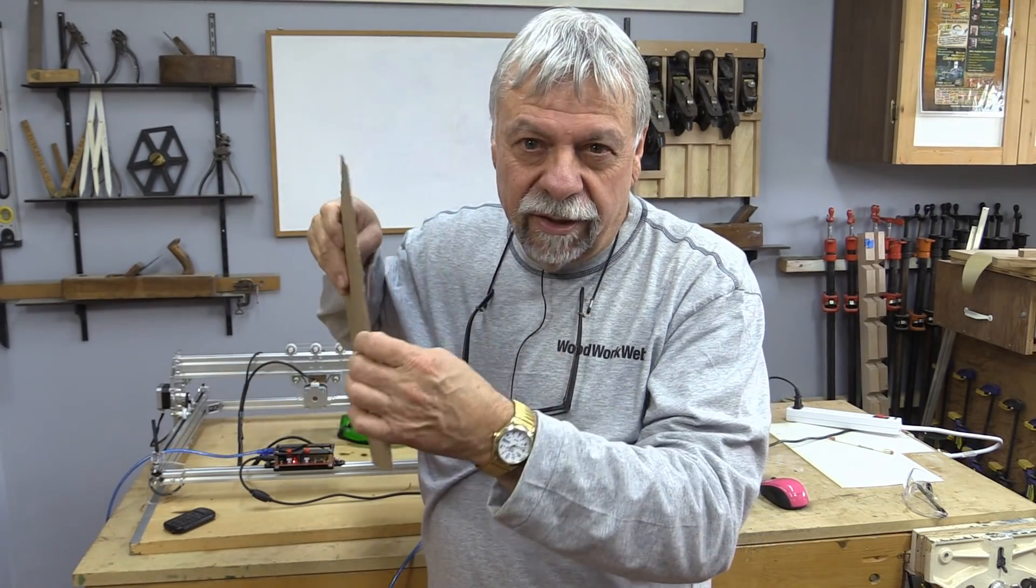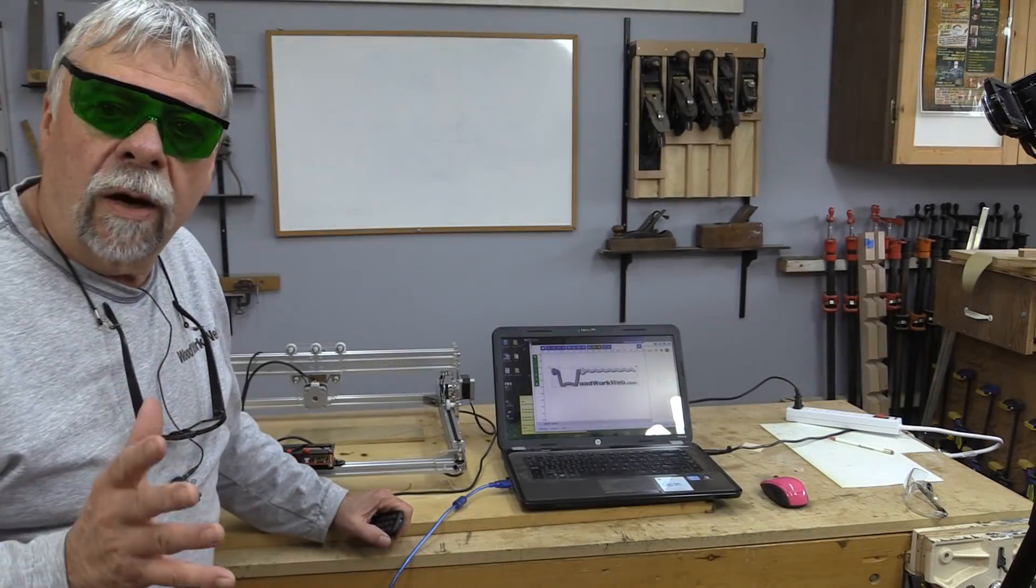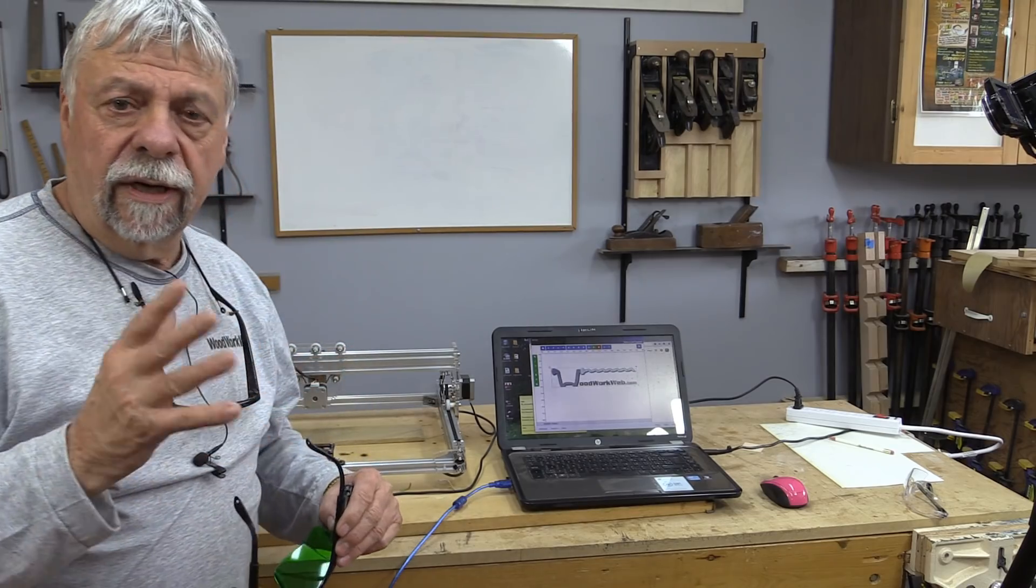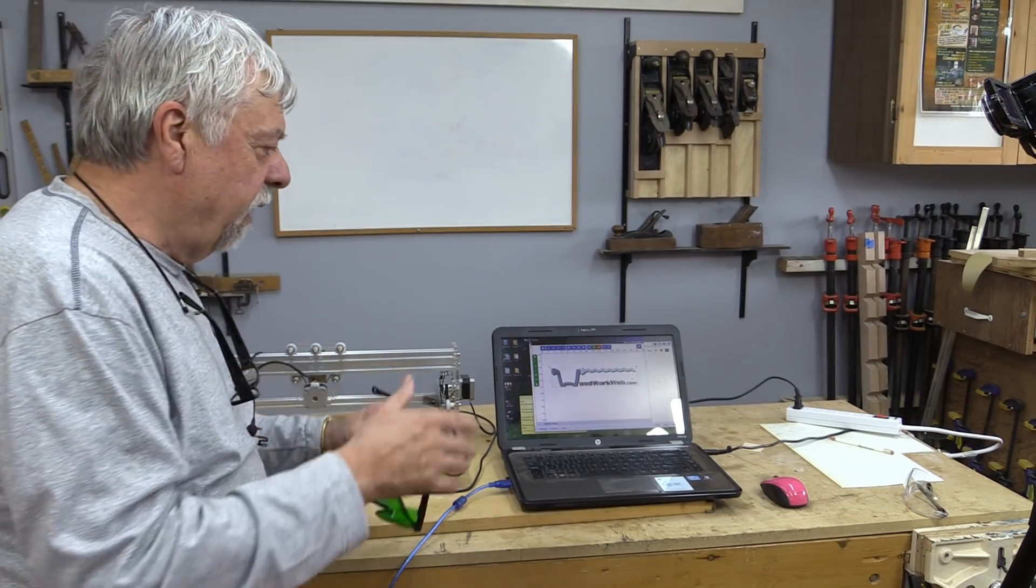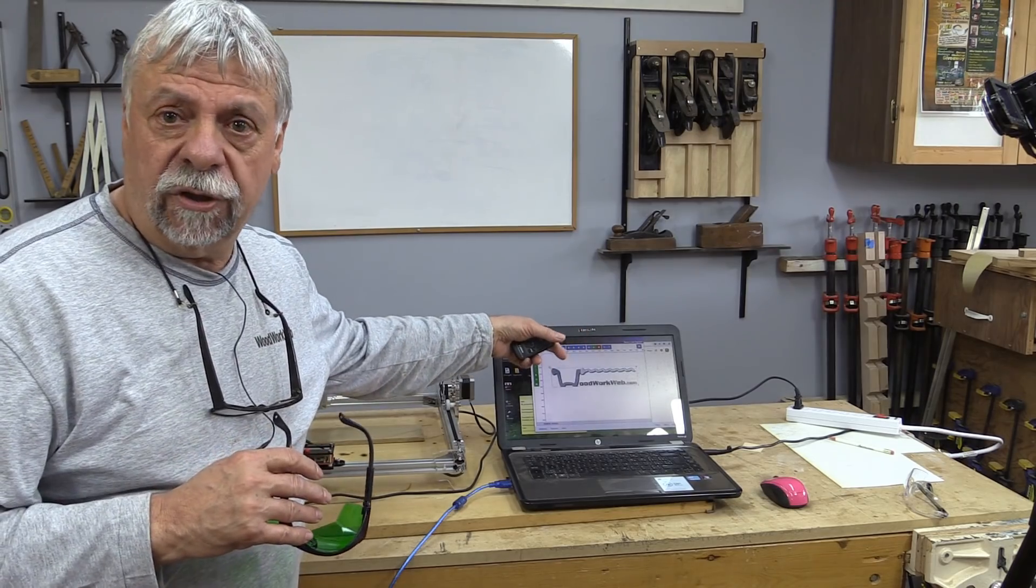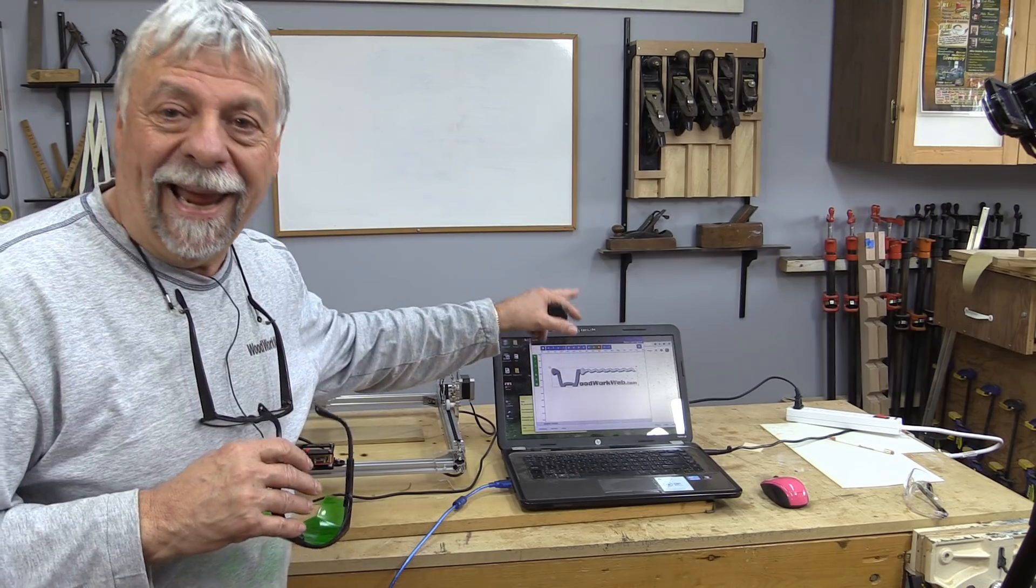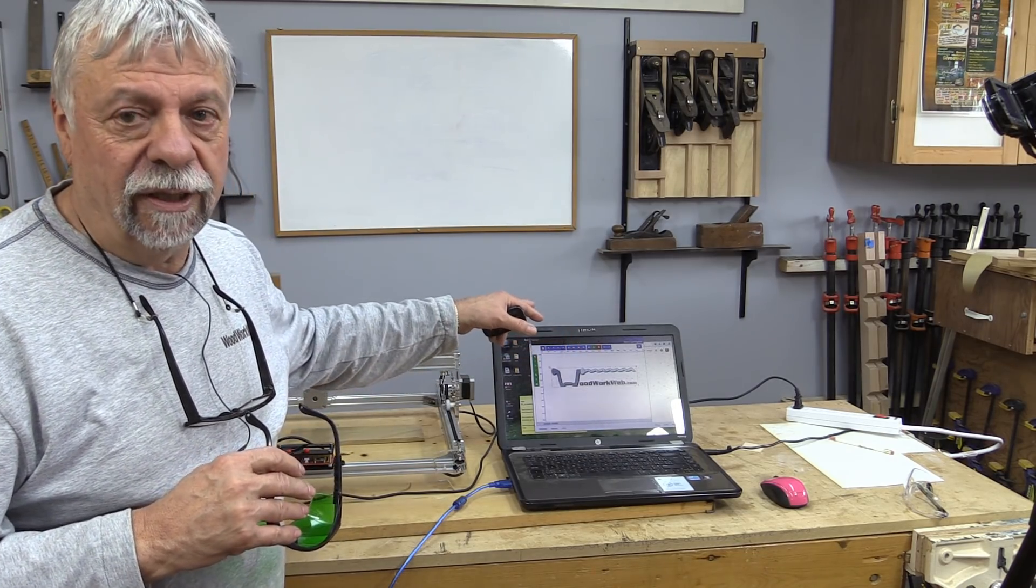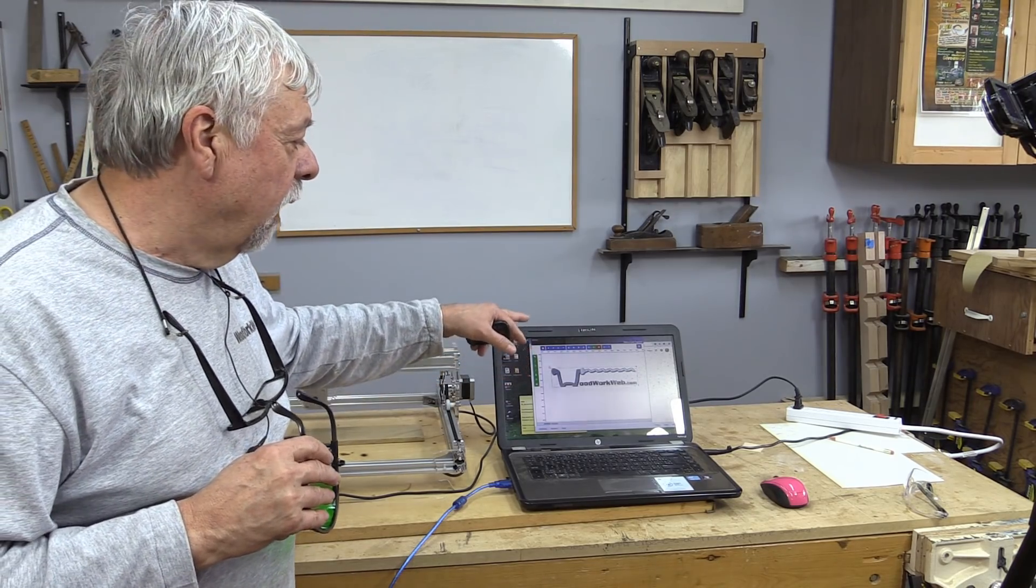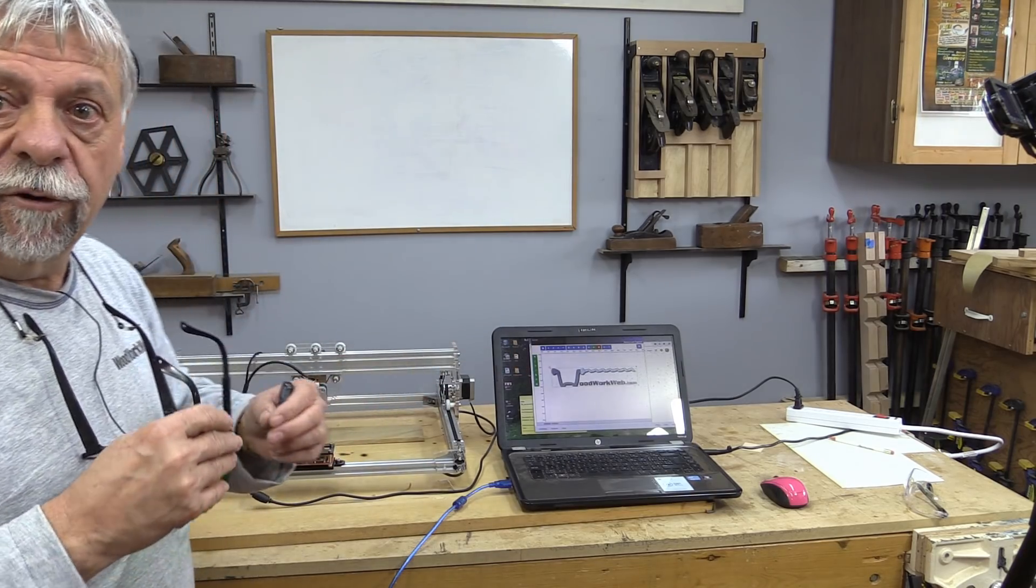They give you these special glasses as well. What I'm going to do now is set up and take the Woodwork Web logo off and I'm just going to put my first name on there and we're going to print that. I'm going to show you in real time and in sped up time because these machines are a little bit slow - remember they're hobby machines or home machines, not commercial. But I'm going to show you what it takes to print just my first name.